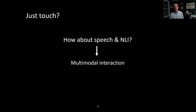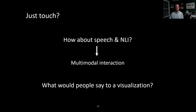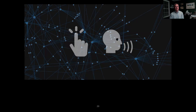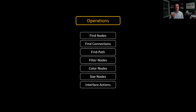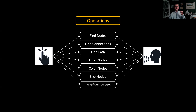An interesting question here is: what would somebody say to a visualization? What kinds of things would they want to accomplish? In our first project in this space, we focused on network visualization. Networks are so common — social networks, flight networks. Very common operations on a network might include finding a node, finding connections between nodes, finding paths, or coloring and sizing nodes differently. The key point was: we wanted users to be able to do these things either with touch or through speech and natural language interaction.